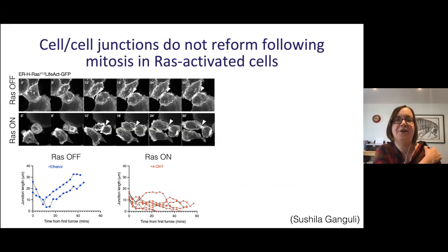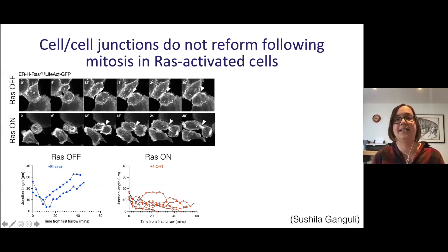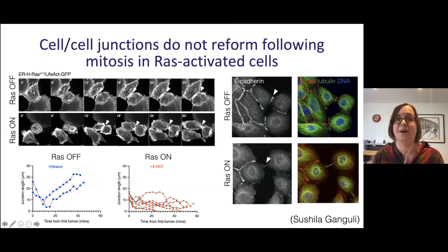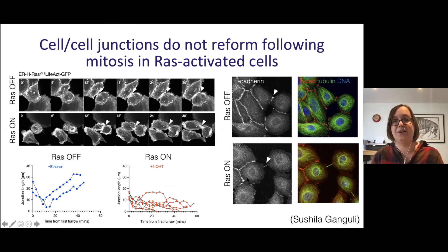The third effect we observe is impaired formation of cell-cell junctions following mitosis. In control epithelial cells, after division the two daughter cells quickly stick together and form a point of adhesion between them. In RAS-activated cells this doesn't happen — daughter cells actually move apart from each other. Immunofluorescence staining for E-cadherin shows that control daughter cells form an E-cadherin-containing cell-cell junction between them, whereas RAS-activated daughter cells retain junctions with pre-existing neighbours but fail to form a new junction with their sister cell.